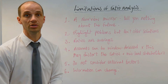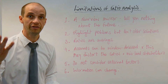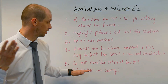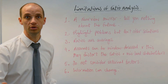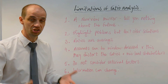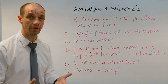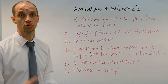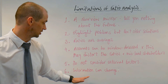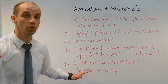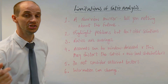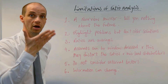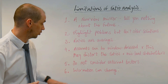Number five: ratios don't consider external factors. We mentioned the fuel price earlier, but it could be the price of fruit and veg, for example, which changes and varies. That would have an impact upon a restaurant-based or food-based business. Ratio analysis doesn't then tell you why your profit has gone up or why your profit has gone down.